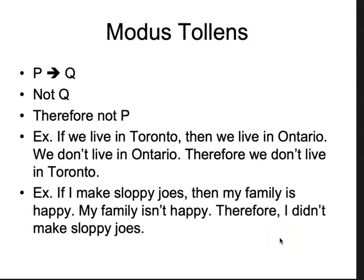Another example: if I make sloppy joes, then my family is happy. If I made them, they are happy — this is guaranteed. Premise two: they are not happy. Therefore, I didn't make sloppy joes. Why? Because if I did, they would be happy. Keep in mind, other things make them happy too, but premise one tells us sloppy joes necessarily do. And if they're not happy, you can certainly conclude I didn't make them.